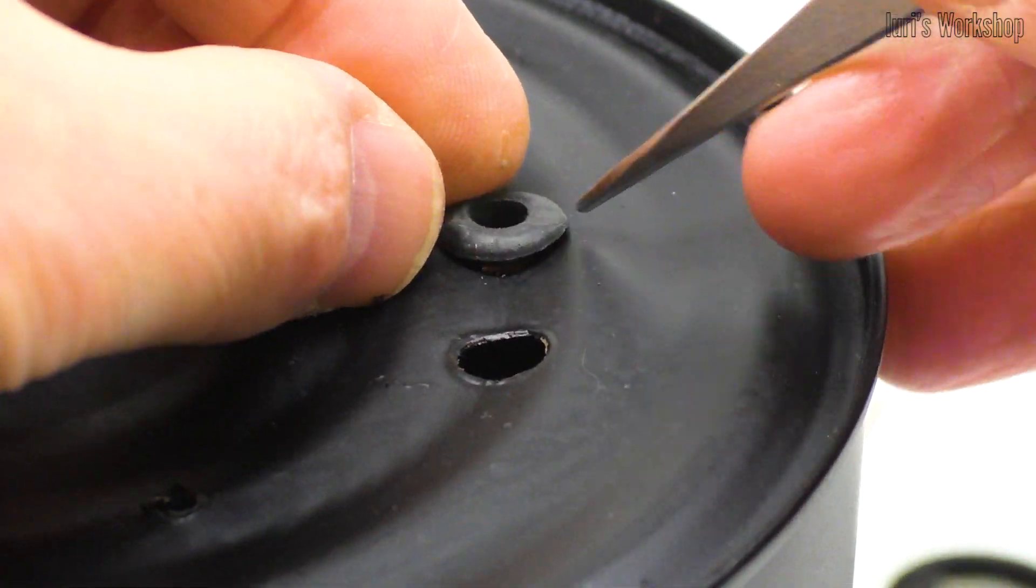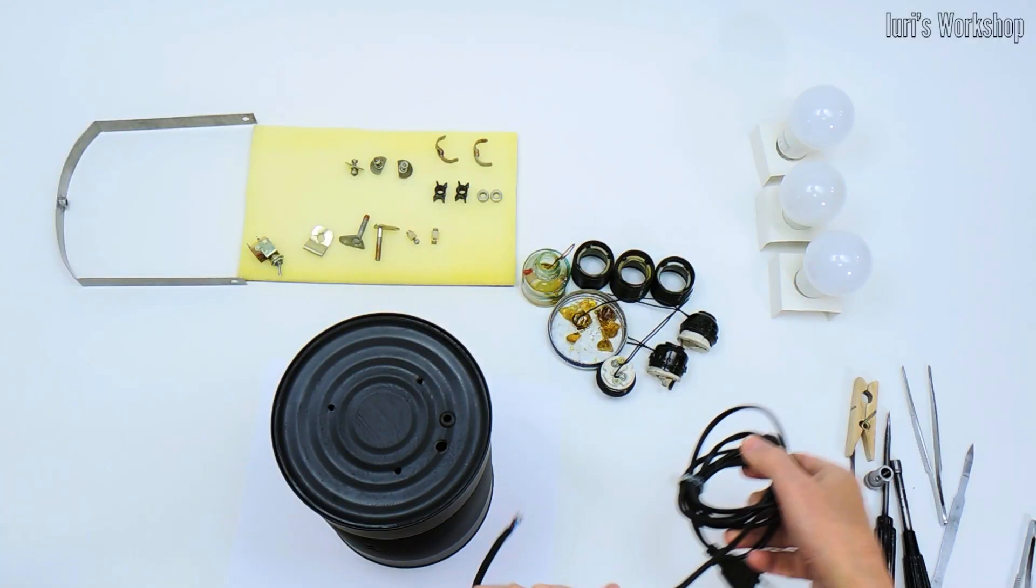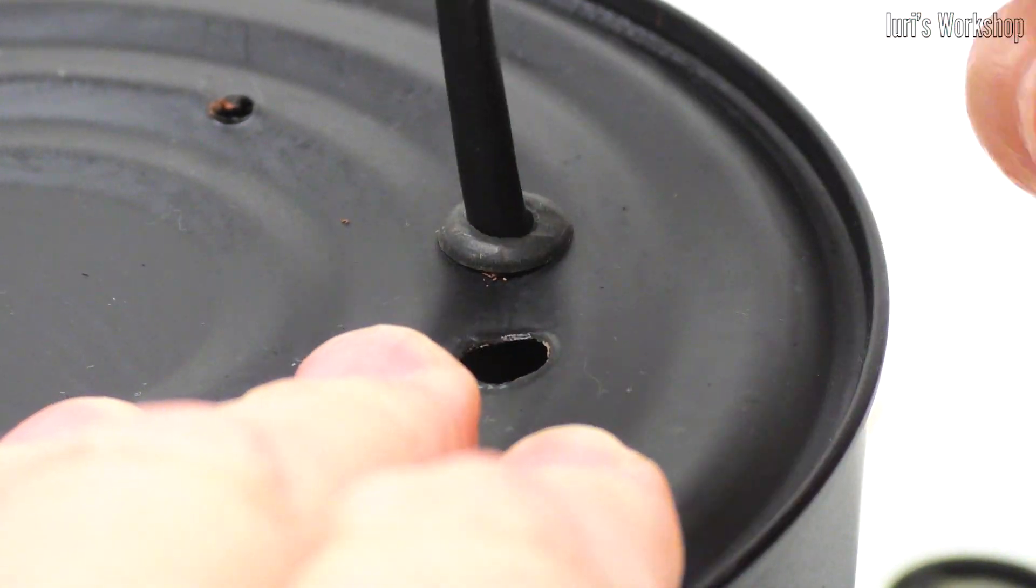The edges of the holes in the tin will be very sharp, so you need to protect the electric cable in any way convenient for you.